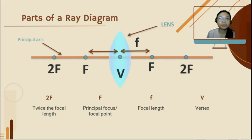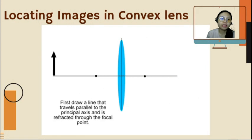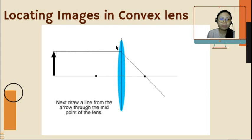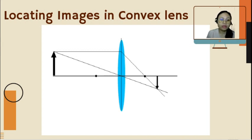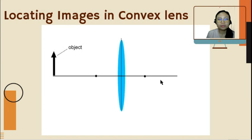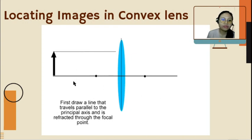How do we locate the image in a convex lens? First, draw a line that travels parallel to the principal axis, and is refracted through the focal point. Next, draw a line from the arrow through the midpoint of the lens — through the vertex. Then draw the image of the arrowhead at the point where the two lines intersect. Those are our two rays — PF and the vertex ray.